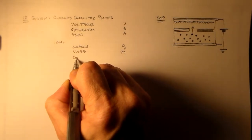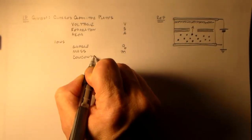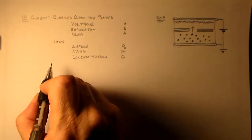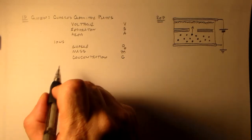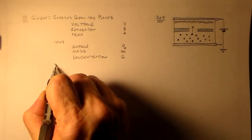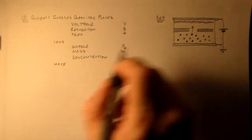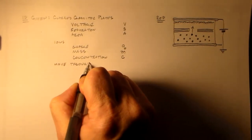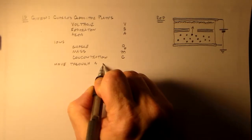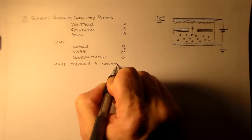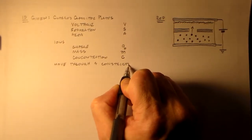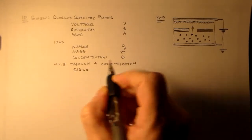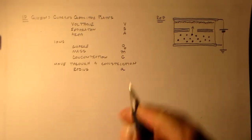And we'll have them have a concentration of C. And they'll move through a constriction, this little constriction here. And let's say that's circular with a radius, little a here, we can use that.